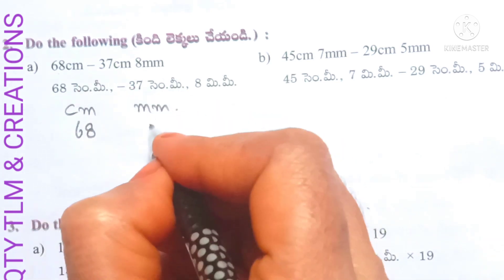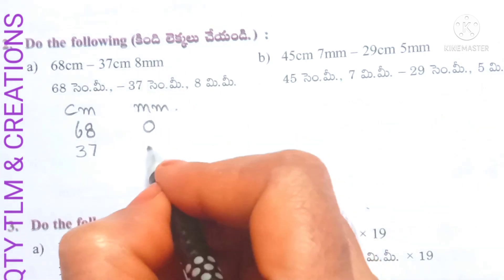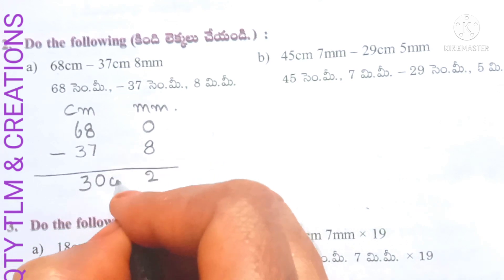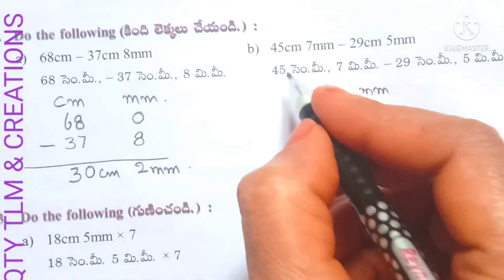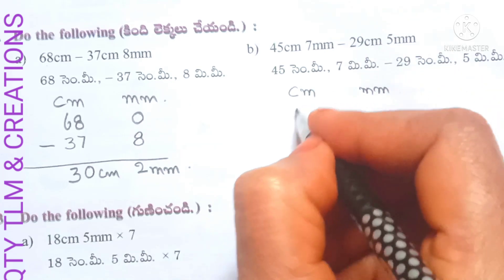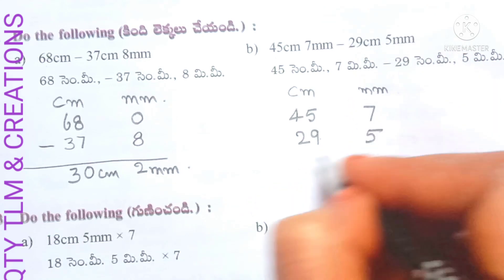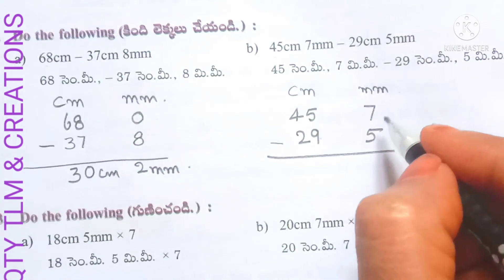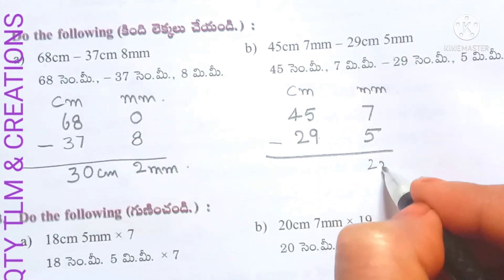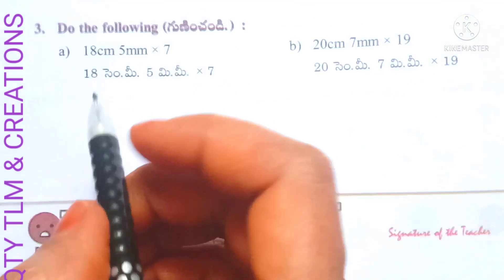Next, do the following subtraction: 68 centimeters minus 37 centimeters and 8 millimeters. 68 centimeters has no millimeters so we write zero in the millimeter place. Subtracting: 37 centimeters and 8 millimeters. Result is 30 centimeters and 2 millimeters. Next, 45 centimeters 7 millimeters minus 29 centimeters 5 millimeters. Subtracting millimeter from millimeter: 7 minus 5 equals 2 millimeters, and the result is 16 centimeters and 2 millimeters.